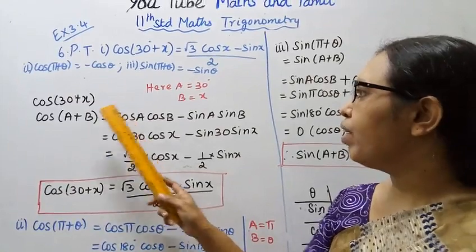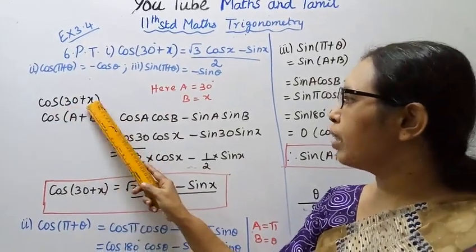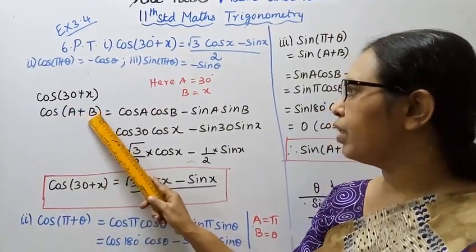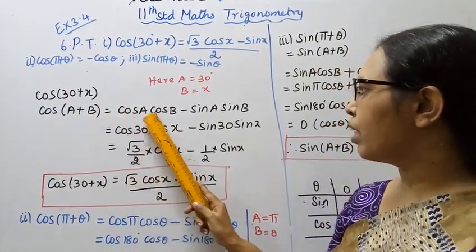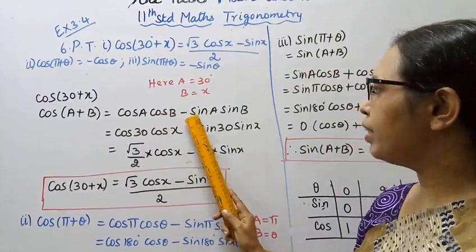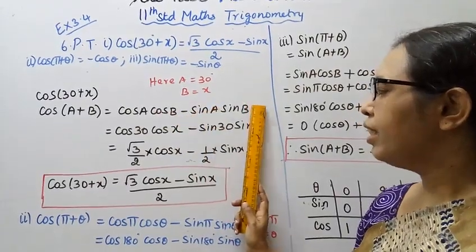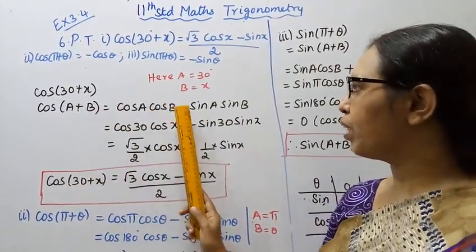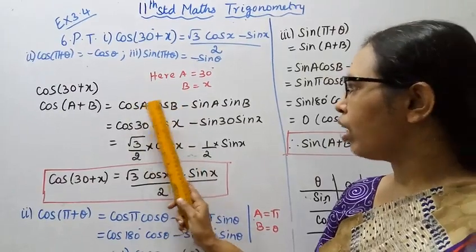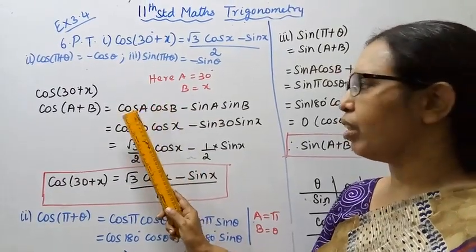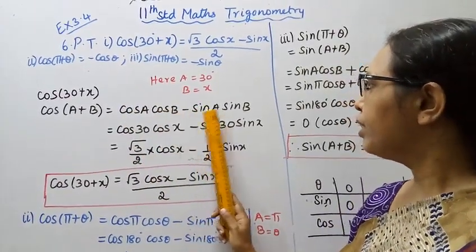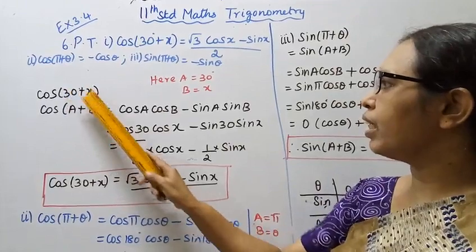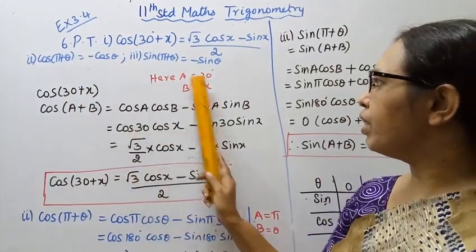For cos(30 + x), we use the formula cos(a + b) = cos a cos b - sin a sin b. Here a = 30, b = x.